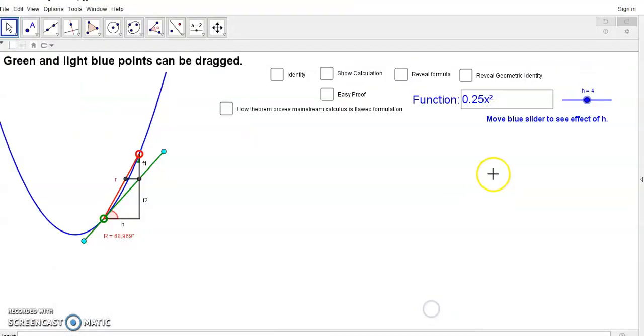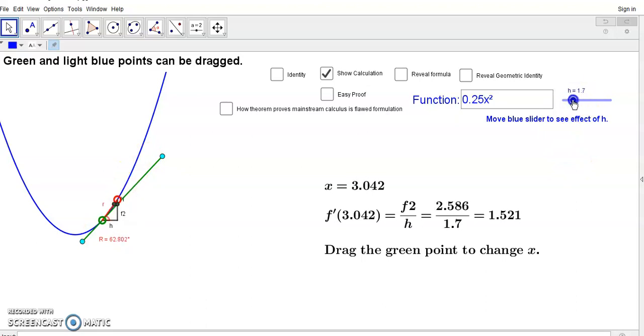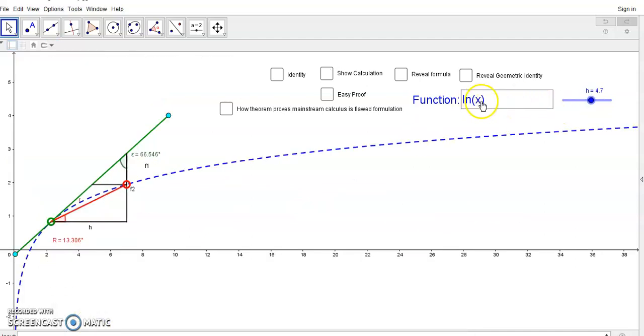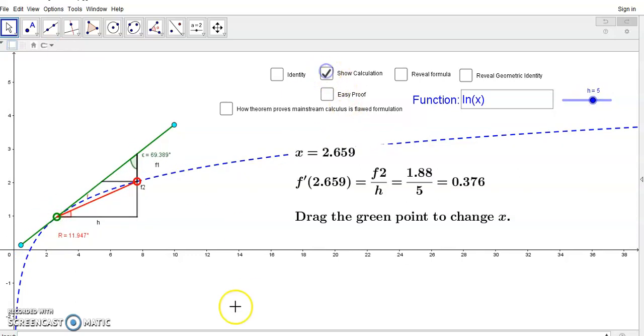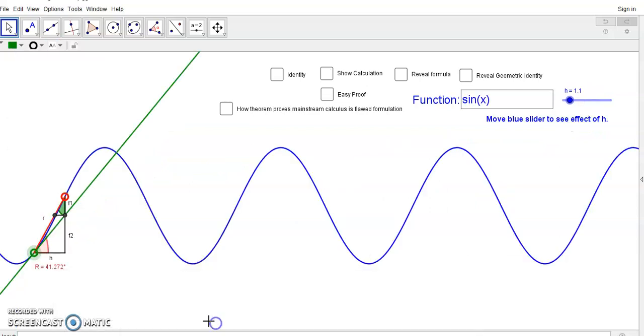Yesterday I showed you how it works with polynomials. You can use any non-zero h and the theorem works. It also applies to logarithmic functions. It doesn't matter which particular function you choose, and the same story with trigonometric functions. It doesn't matter which function you choose.